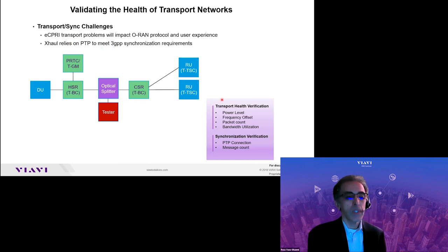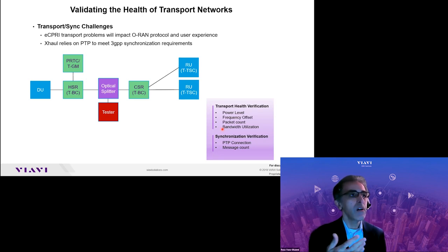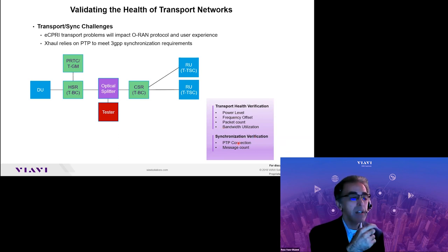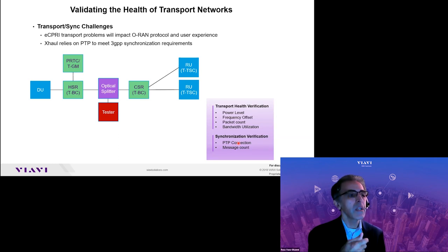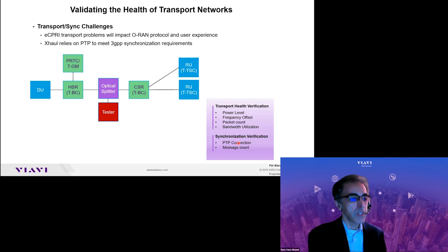PTP is also important. We recommend basic transport health verification: start with power levels, frequency, packet counts, and bandwidth utilization — just verify there is basic fiber connectivity and packets are traversing the network roughly in line with the utilization and throughput you're expecting. The same can be done with PTP packets: check if there is a connection to whatever grandmaster is present and if we're seeing valid messages and correct message counts as defined in the ITU-T G.8275.1 profile. Once you verify PTP is up and running, you have completed basic transport health checking.